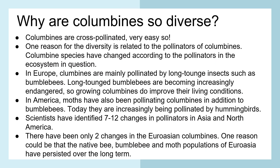Why are Columbines so diverse? Columbines are cross-pollinated and very easily so. One reason for the diversity is related to the pollinators of Columbines. Columbine species have changed according to the pollinators in the ecosystem in question. In Europe, Columbines are mainly pollinated by long-tongued insects such as bumblebees, which are becoming increasingly endangered, so growing Columbines does improve their living conditions. In America, moths have also been pollinating Columbines in addition to bumblebees, and today they are increasingly being pollinated by hummingbirds. Scientists have identified 7–12 changes in pollinators in Asia and North America, while there have been only two changes in the Euro-Asian Columbines.